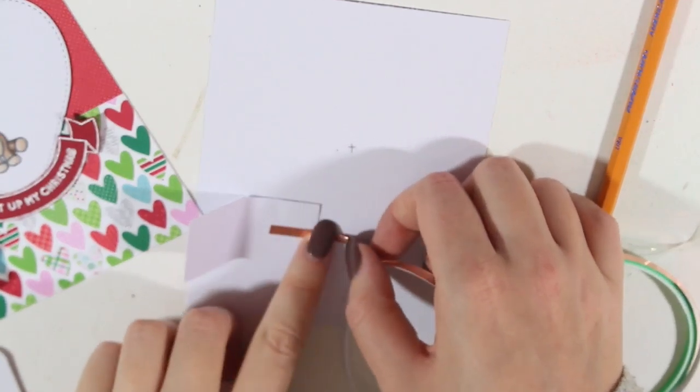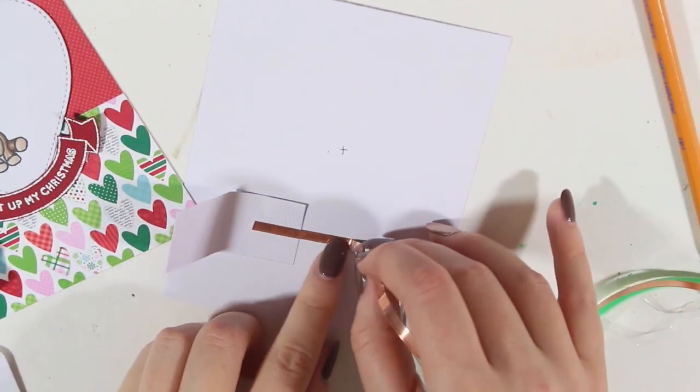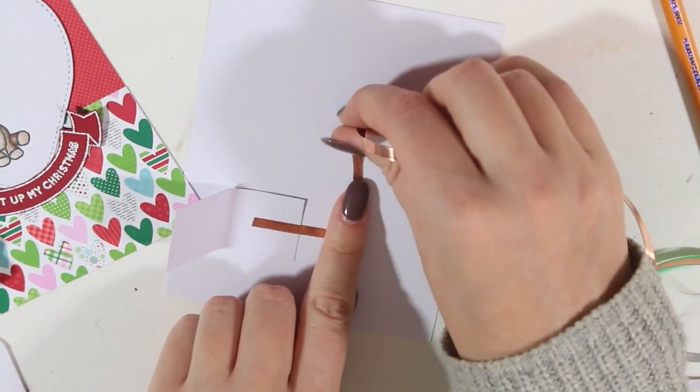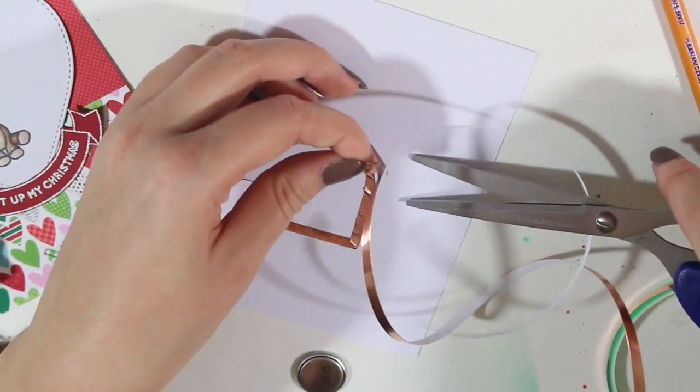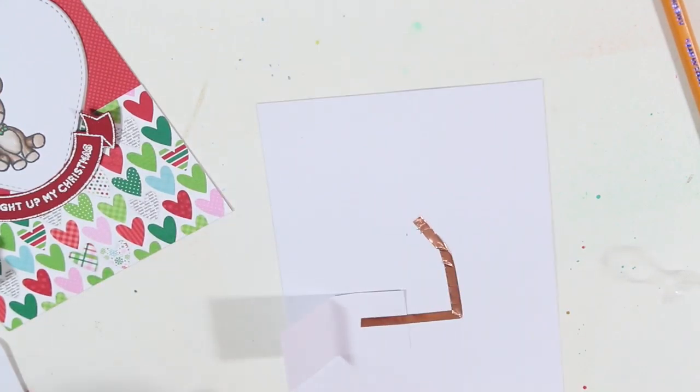So, you're going to want to make sure that the copper tape is going to your positive side. And in order to make little bends, you just kind of bend it forward and then bend it up. This took some practice and I did originally rip it while trying to bend it.